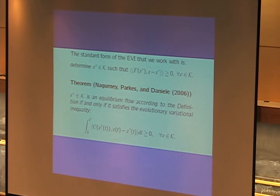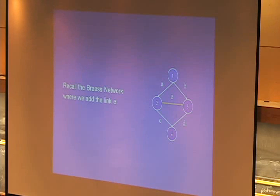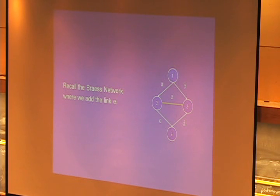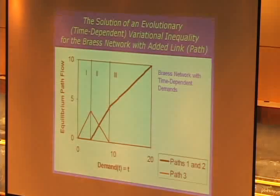We think of demands that can change over time - capacities can change over time. Let's go back to the book and consider that second network where we've added the link. I'm going to be varying the demand. Let's assume one class of messages, and DW as a function of time is just equal to time - that's just going to be an increasing demand. What is going to happen to the equilibrium flow? The solution is actually an evolutionary variational equality.